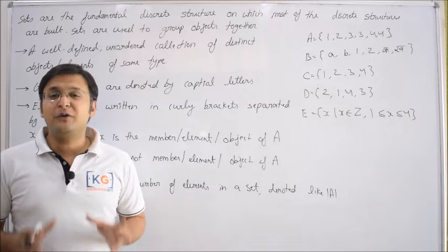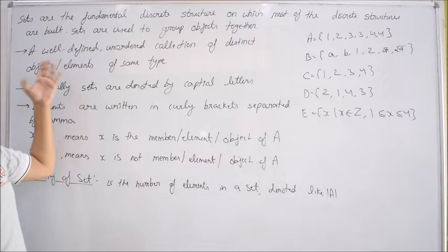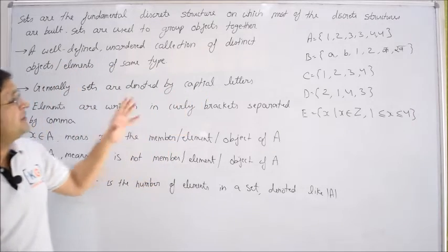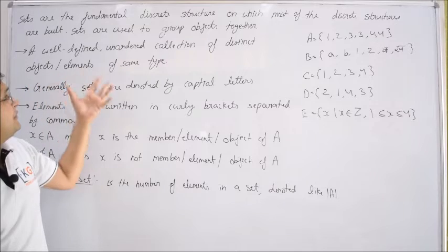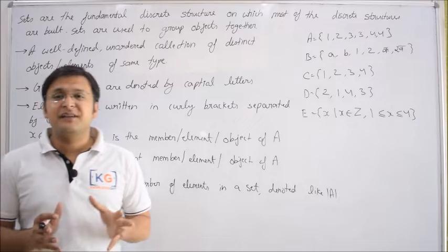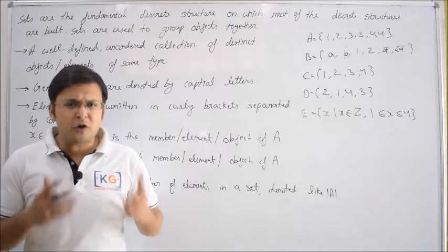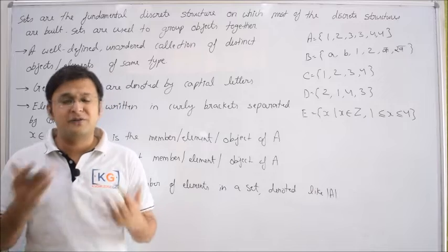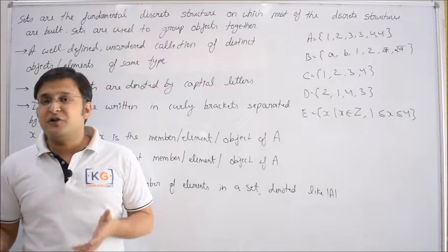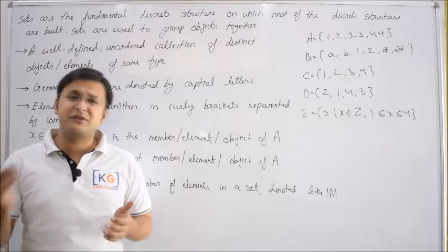Before directly going to the definition, first understand that sets are the fundamental discrete structures on which other discrete structures are built, and are useful to group objects together. Sets are really the basic fundamental structure, and no matter what topic in discrete mathematics you consider — groups, permutation combinations, probability, graph theory — all are based on set theory.